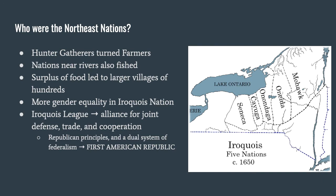The Northeast nations were originally hunter-gatherers who turned to farming. Around 5,000 BCE, agriculture starts to be seen in the Americas. The Northeast nations adopted agriculture, and that surplus of food allowed them to build permanent settlements numbering in the hundreds. We see many, many villages all along the Northeast region with many, many members.